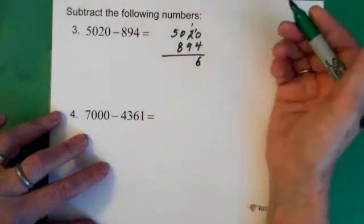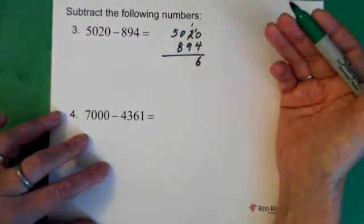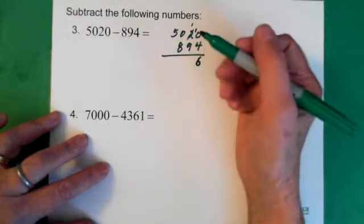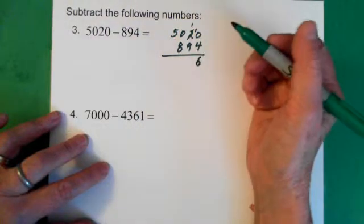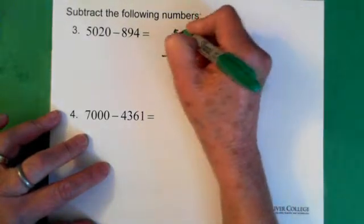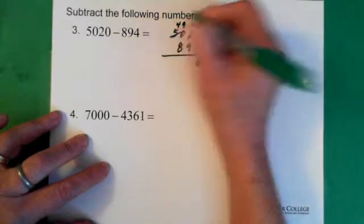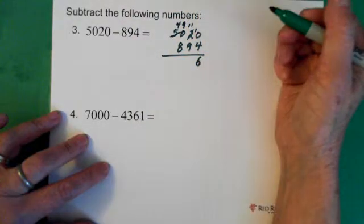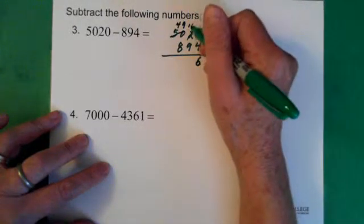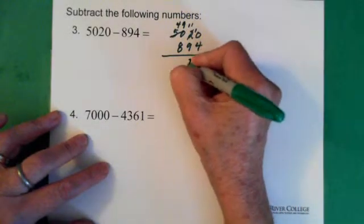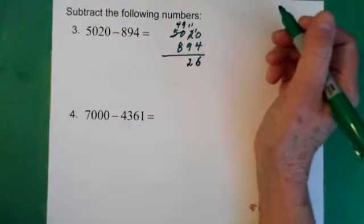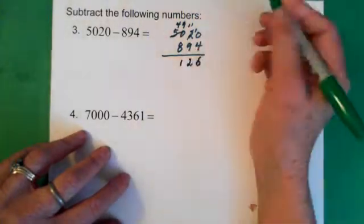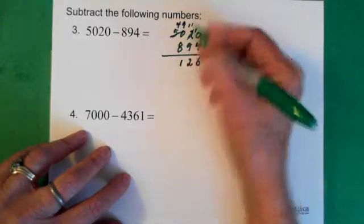But now we have 1 minus 9, which we can't subtract. So we have to borrow from the 50. We borrow a 1 from the 50, so this becomes a 49, and the 1 goes up here with the other 1. Now we have 11 minus 9, which is 2. Here we have 9 minus 8, which is 1. And 4 minus 0, which is 4.